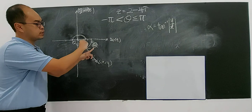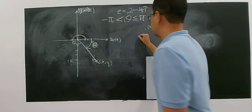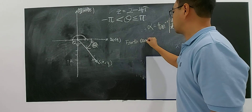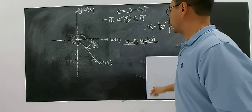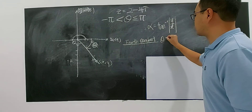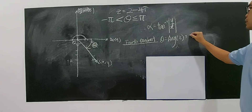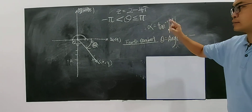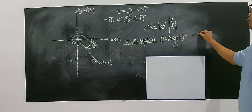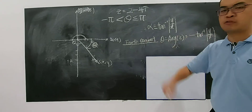The argument here, moving in the clockwise direction, must be a negative angle. Very simple: for the fourth quadrant, the argument must be negative. The formula of arg(z) is negative arctangent of modulus of y over x. This is the formula for the fourth quadrant.